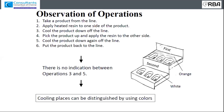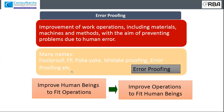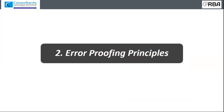Error proofing has different names — foolproofing, mistake proofing, error picking, and others. The key shift in this concept is moving from 'improve human beings to fit operations' to 'improve operations to fit human beings.' We cannot change every human being, so we must make operations compatible for all. For example, since operators have different heights, workstations must be flexible — this is the ultimate aim of human error prevention principles.